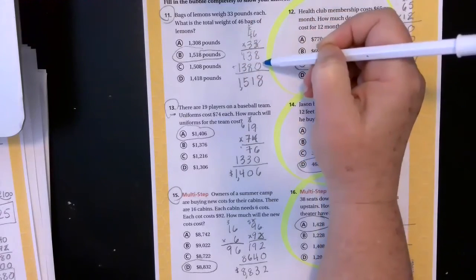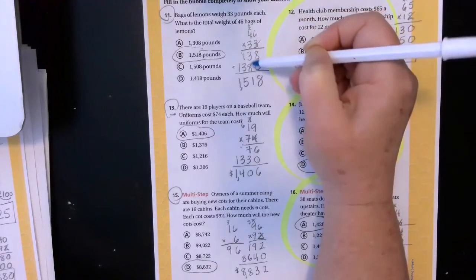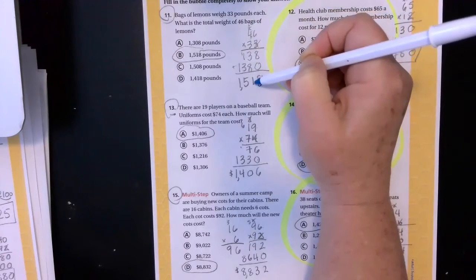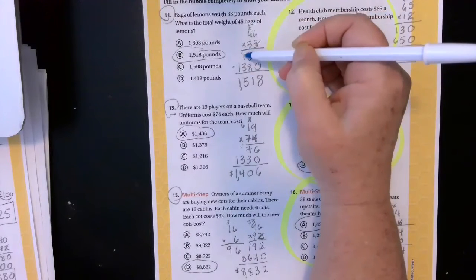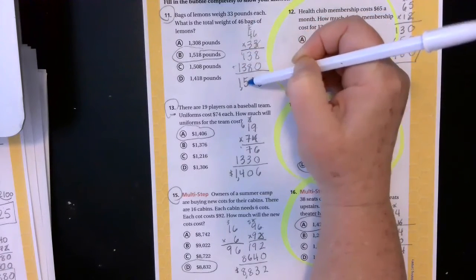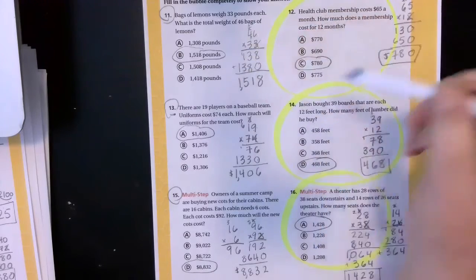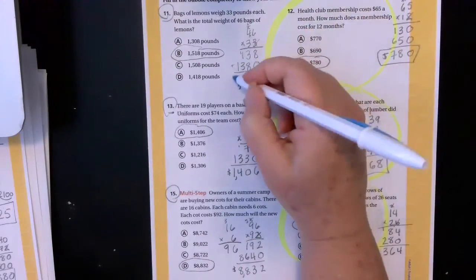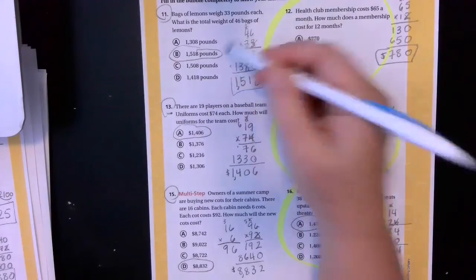Three plus eight is 11. Put down my one, carry my one. One plus two is, one plus one is two. Sorry. Plus three is five. Nothing plus one is one. So 1,518. And wouldn't you know our answer is right there.